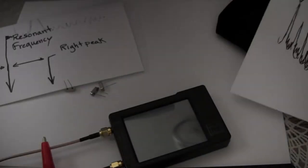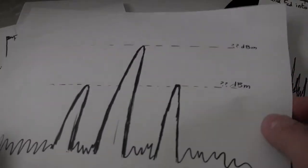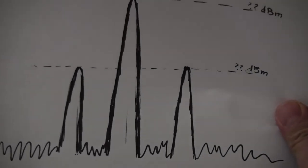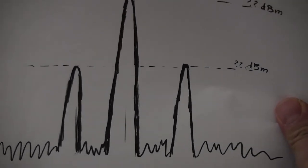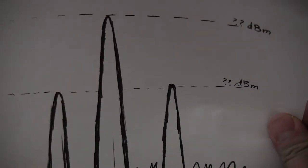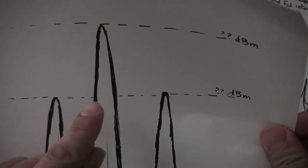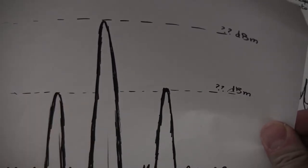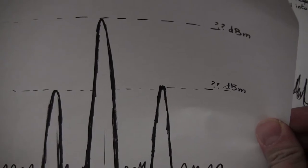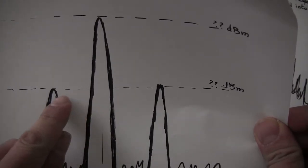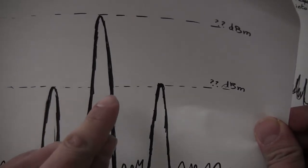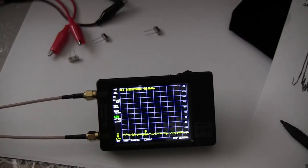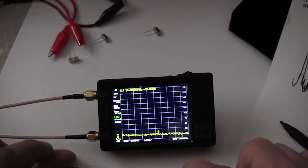The peak in the middle will be the resonance frequency of your crystal. If we zoom in, the distance between the center peak and the two side peaks is going to be equal to the resonance frequency of the TinySA generator, and it's going to be one megahertz on each side. Now we have the TinySA up and running.